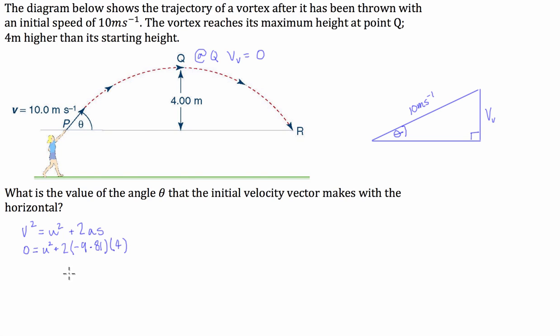What we end up having is if we move all of this over to the other side, we can rearrange this to say u squared is equal to 78.48. So u then is going to equal the square root of 78.48, and that is equal to 8.86 meters per second.